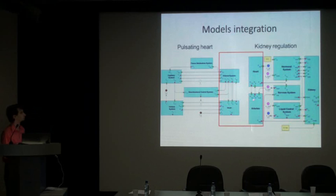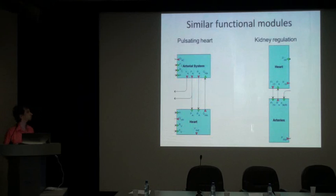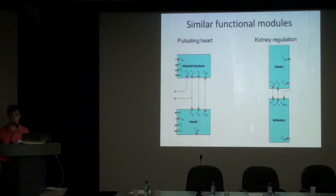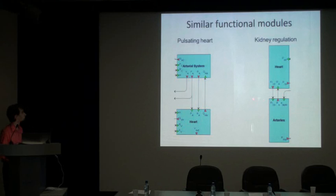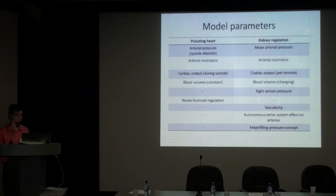Here are those modules. We would like to remove the heart and artery modules from the kidney regulation model, as they represent average parameters, while the pulsating heart model presents parameters that oscillate as the heart beats. We would like to remove those modules. Here is a map of parameters, just to examine what we will lose and what we will gain by removing those modules.